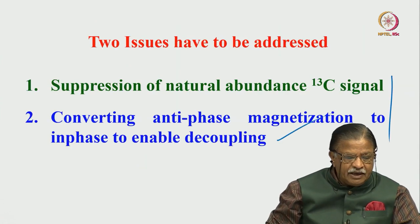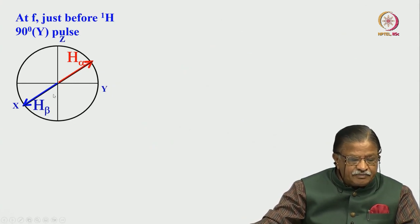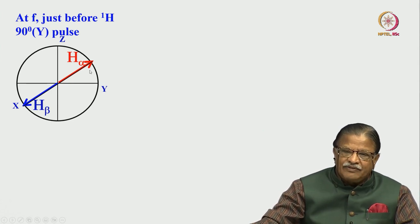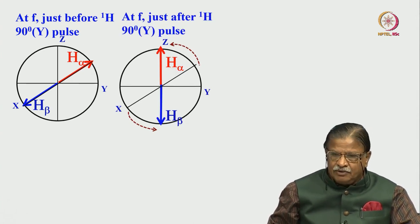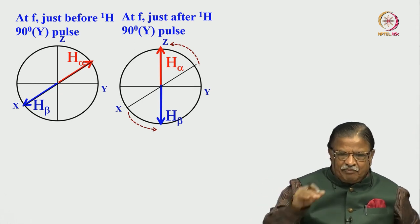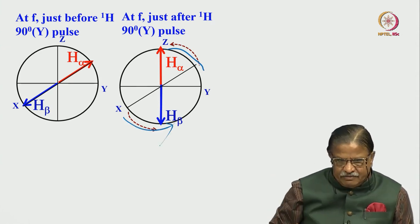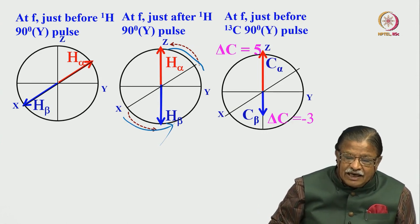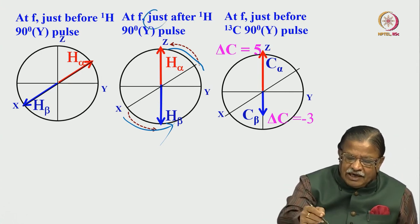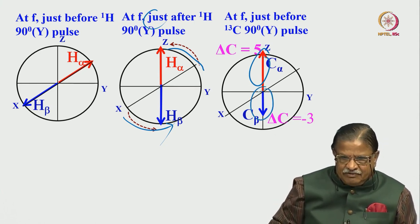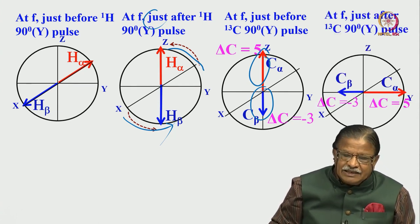At point F, just before applying a 90 degree pulse, the proton signal — the two vectors — are antiphase to each other; the alpha and beta components are antiphase to each other. Just after the 90 pulse, they were in antiphase along the y-axis, and applying a 90 degree pulse takes them back to the z-axis. One alpha component goes to plus-z and the beta component comes to minus-z. For carbon-13, just before the 90 degree pulse, one is plus 5 and the other is minus 3.